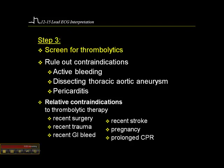When assessing patients, we're also screening them for thrombolysis. We want to rule out things like active bleeding, and assess for the potential of a dissecting thoracic aortic aneurysm, although that's uncommon. We want to assess for pericarditis, which can mimic MI on a 12-lead ECG. We also look for relative contraindications to thrombolysis such as surgery, trauma, GI bleeds, recent stroke, pregnancy, or prolonged CPR.